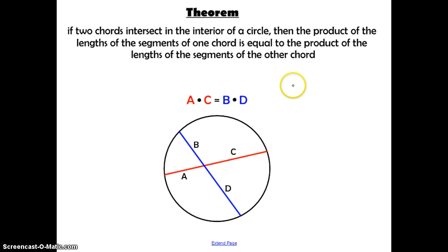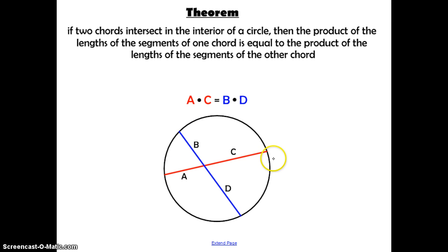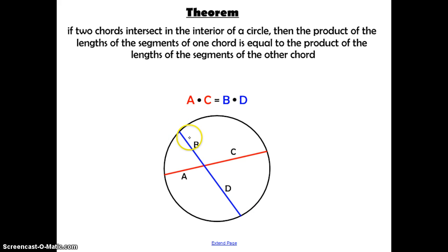If two chords intersect in the interior of a circle, then the product of the lengths of the segments of one chord is equal to the product of the lengths of the segments of the other chord. So if two chords intersect inside the circle, you take one chord's two parts A and C multiplied together, and that equals the other chord's parts B times D.